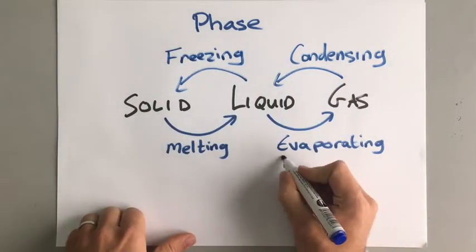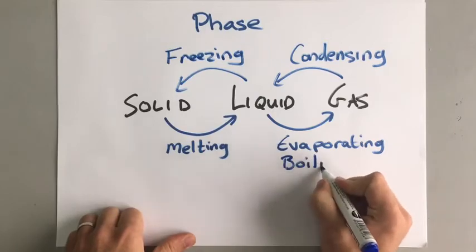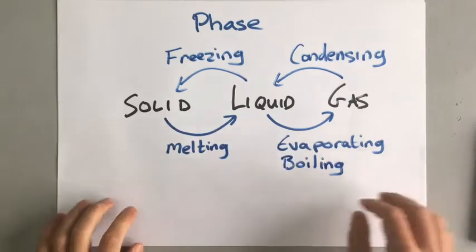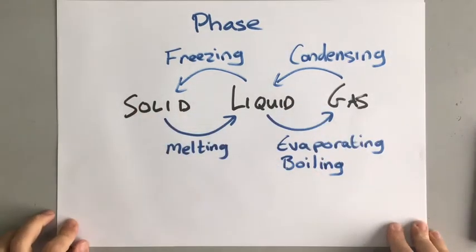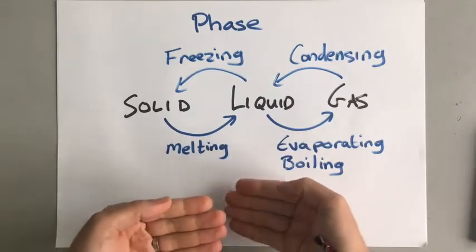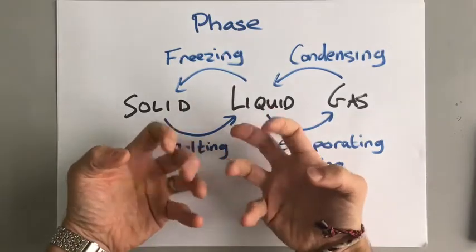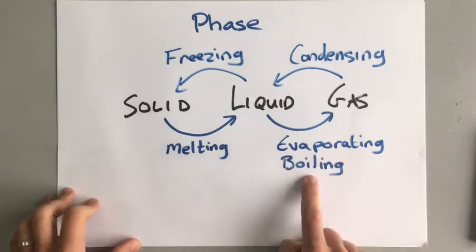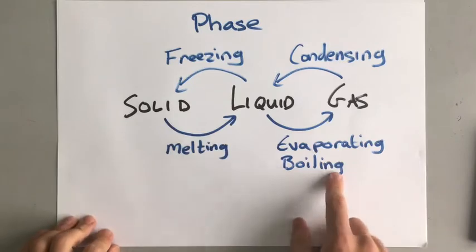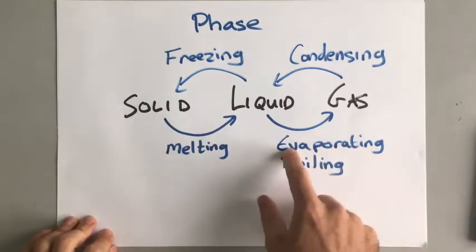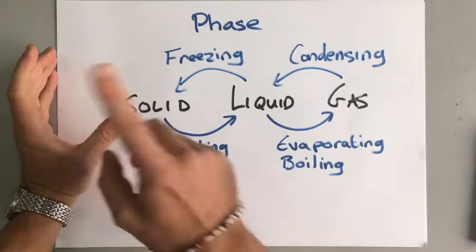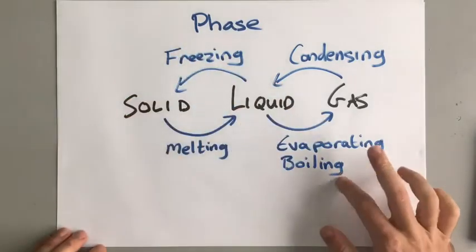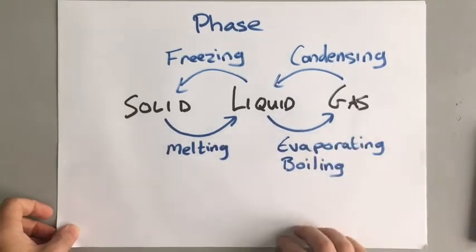Evaporating could also be called boiling, but there's a slight difference. Evaporating happens only at the surface of the liquid — only the very top layer evaporates. But boiling happens all the way through the liquid; you've seen when something's boiling the bubbles come from the bottom. Also, boiling only happens at the boiling point, which for water is 100 degrees. If you left a cup of water out for a few days it would evaporate — it would never reach 100 degrees — but it would slowly evaporate.